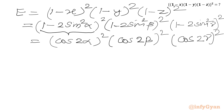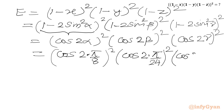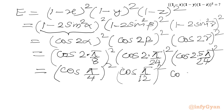Now α, β, γ are known. So cos(2α) = cos(2 · π/8) = cos(π/4), cos(2β) = cos(2 · π/24) = cos(π/12), and cos(2γ) = cos(2 · 5π/24) = cos(5π/12). We write E = cos²(π/4) · cos²(π/12) · cos²(5π/12).